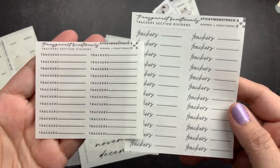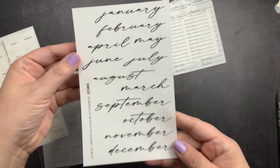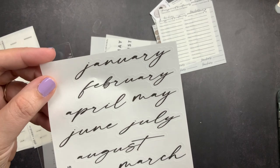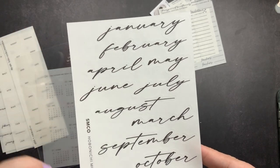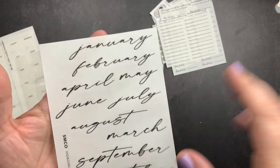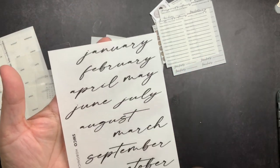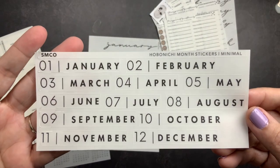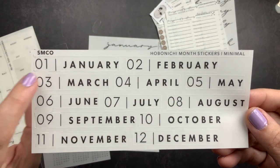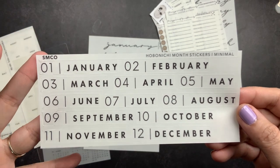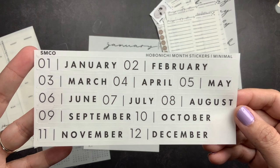And I got these Hobonichi monthly stickers to use to decorate the monthly spreads in one of my planners. I don't have any Hobonichi, so it's not going in a Hobonichi, but they are sized for the Hobonichi cousin. So they will fit nicely on your Hobonichi cousin. They'd actually work nicely in your weeks or your A6 as well. And then I got these Hobonichi minimal stickers that have the number of the month and then the name of the month. I really liked the aesthetic of these. So I got those as well.